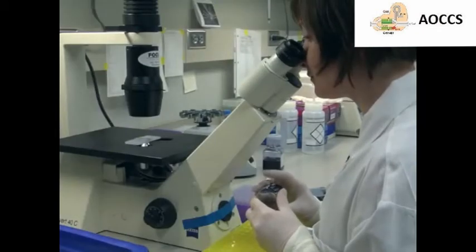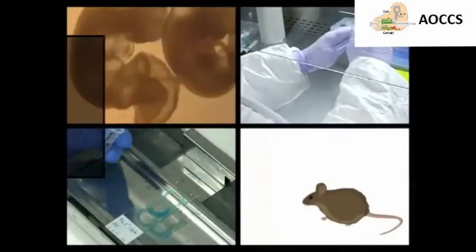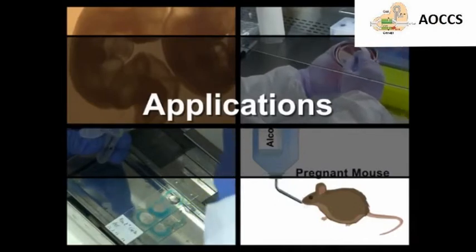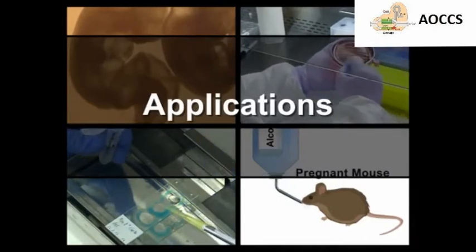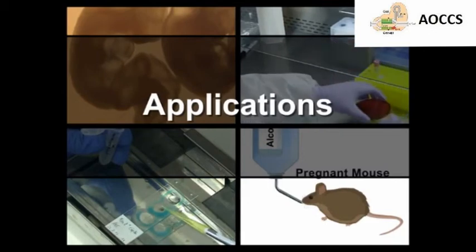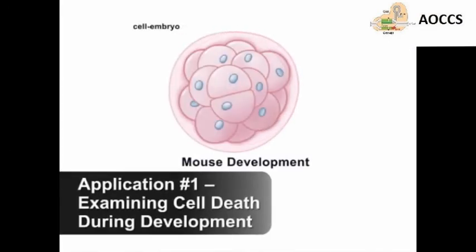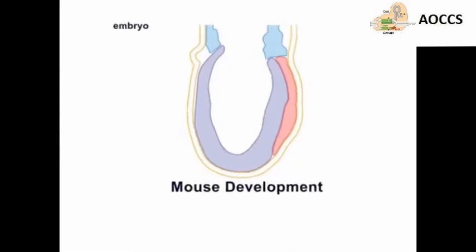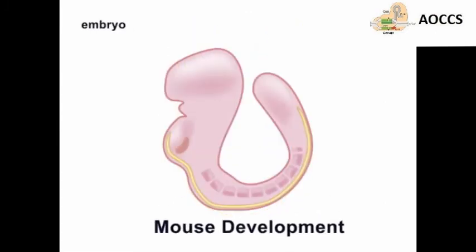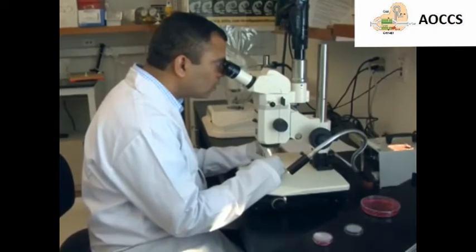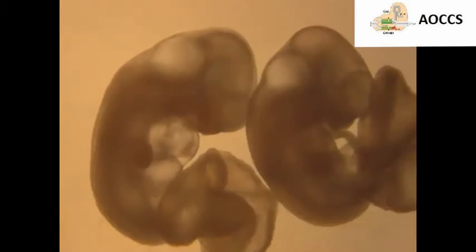Now that you've seen how to perform the TUNEL assay to detect apoptotic cells, let's discuss how this assay can be used to address questions asked by cell biologists. Cell death occurs as a normal part of development for the sculpting of tissues and structures and for the elimination of unnecessary cells. Therefore, scientists interested in this phenomenon study the effect of prenatal exposure to different substances on apoptosis during development.